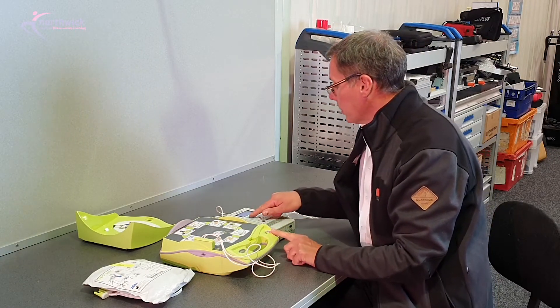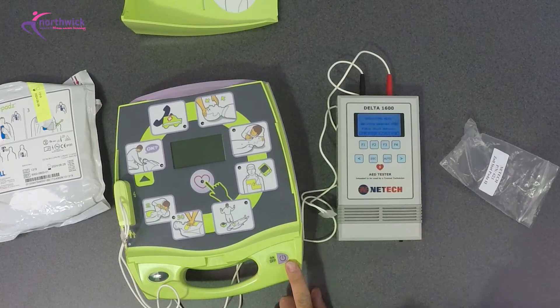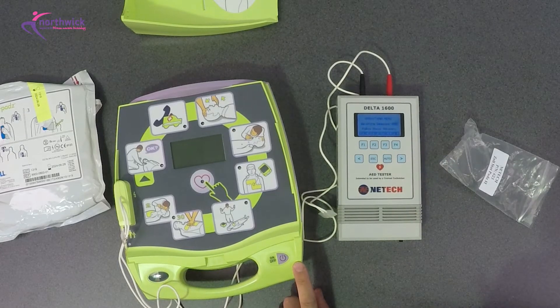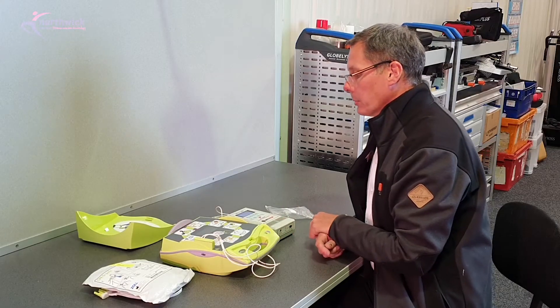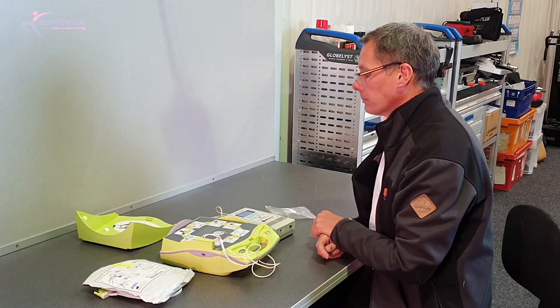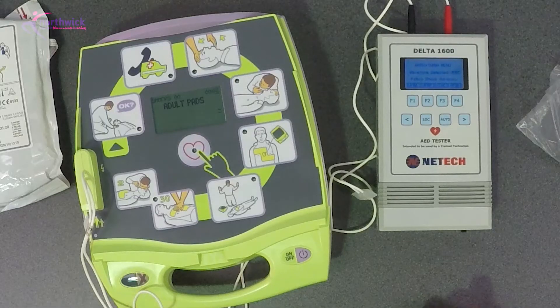So I'm going to put the test equipment onto the arrhythmia pattern that would require a shock, and we'll turn the device on and we'll let it go through its sequence. Adult pads unit, okay.